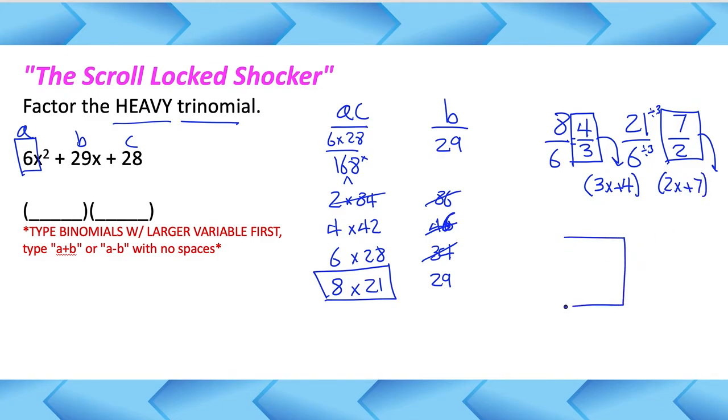Watch this. If I check my work with a poly box, watch what I get here students. If I take the 3x and the 4 times the 2x and the 7, I'm going to get a 6x squared, a 21x, an 8x, and a 28. So when I combine the like terms, guess what, it turns right back into that trinomial right there. So kind of crazy but it works every single time.